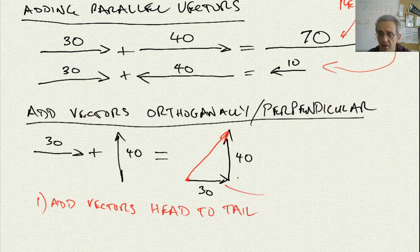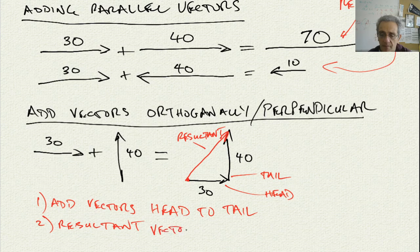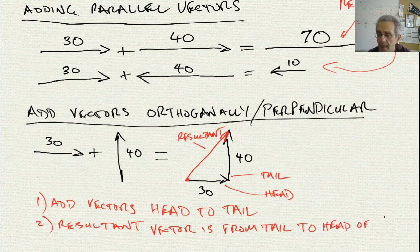Rule number one: add vectors head to tail. Notice that there is the head of the first vector, and there is the tail of the second vector. Rule number two: the resultant vector goes from the first tail to the last head of the component vectors.